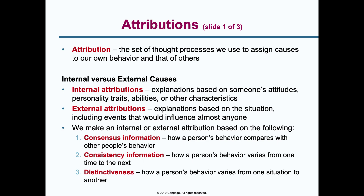An external attribution is more situational — we explain things based on something outside of ourselves. For example, 'My brother walks to work because his car wouldn't start.' His car not starting is an external attribution. So if he walks because he likes to exercise, that's internal. If he walks because his car wouldn't start, that's external — attributing the behavior to an outside situation.